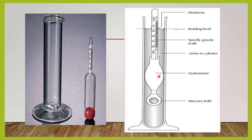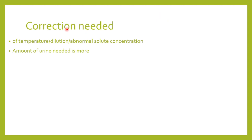The urinometer has a hydrometer, a mercury bulb, and a cylinder wherein we put the urine, and a reading level. At the lower meniscus we read the specific gravity. The disadvantage of the urinometer method is that correction is needed for temperature variation, dilution factor, and if there is abnormal solute concentration like glucose or protein. It also requires around 15 to 20 ml of urine.